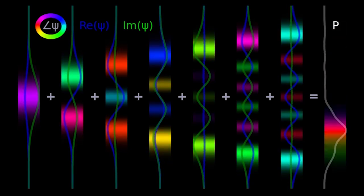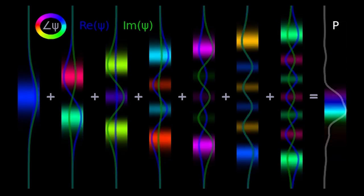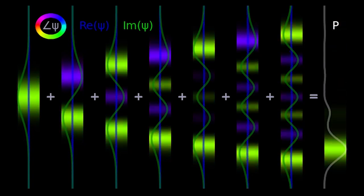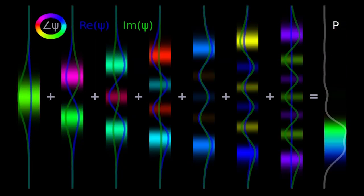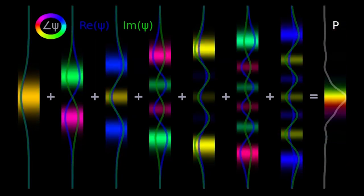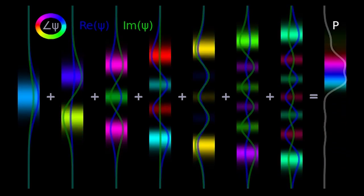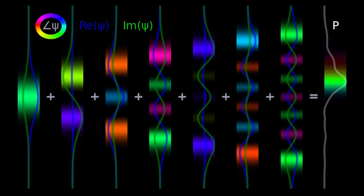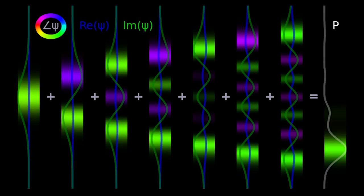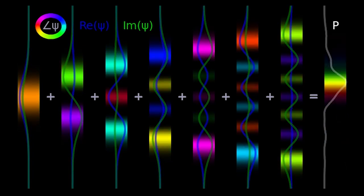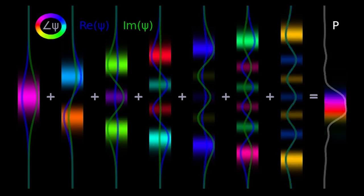Now, a remarkable thing is that even though the stationary states have constant probability over time, a superposition of these states will give you a wave function that moves back and forth over time. That's what the plus signs and the equal sign represent. The particle's wave function is a superposition of these stationary states. Even though the probability density of the stationary states is constant in time, their superposition, because of the interaction of the phase angles and the constructive and destructive interference, their superposition actually gives you this nice little sort of moving oscillating wave packet.